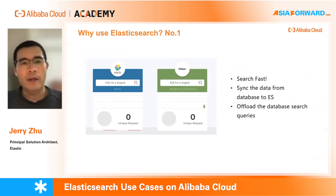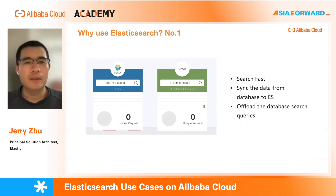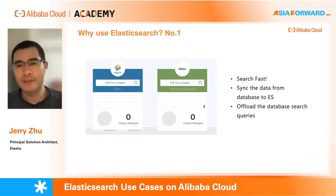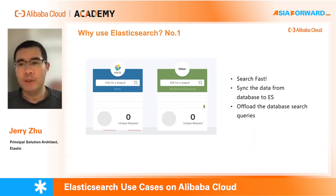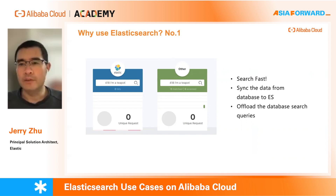Next, why do people use Elasticsearch? I will list several advantages. The number one reason is search speed — Elasticsearch is really very fast. Powered by a good index built on Lucene, Elasticsearch can help you search very, very quickly.